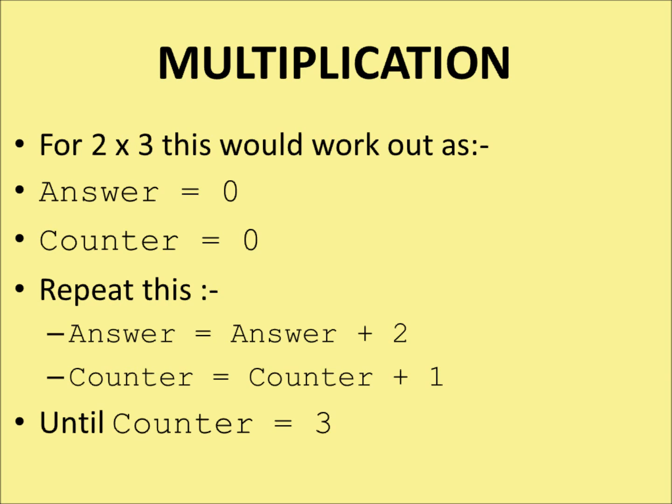We take the old value of the counter, which was 1, add 1 to it, and that becomes 2. Counter is 2, which is not the same as 3, so we go back and repeat it again. We take the old value of the answer, which was 4, add 2 to it, so the new value of the answer is 6. We take the old value of counter, which was 2, add 1 to it, which makes it 3. Now we find that the condition is true — counter is equal to 3 — so we stop going round the loop.